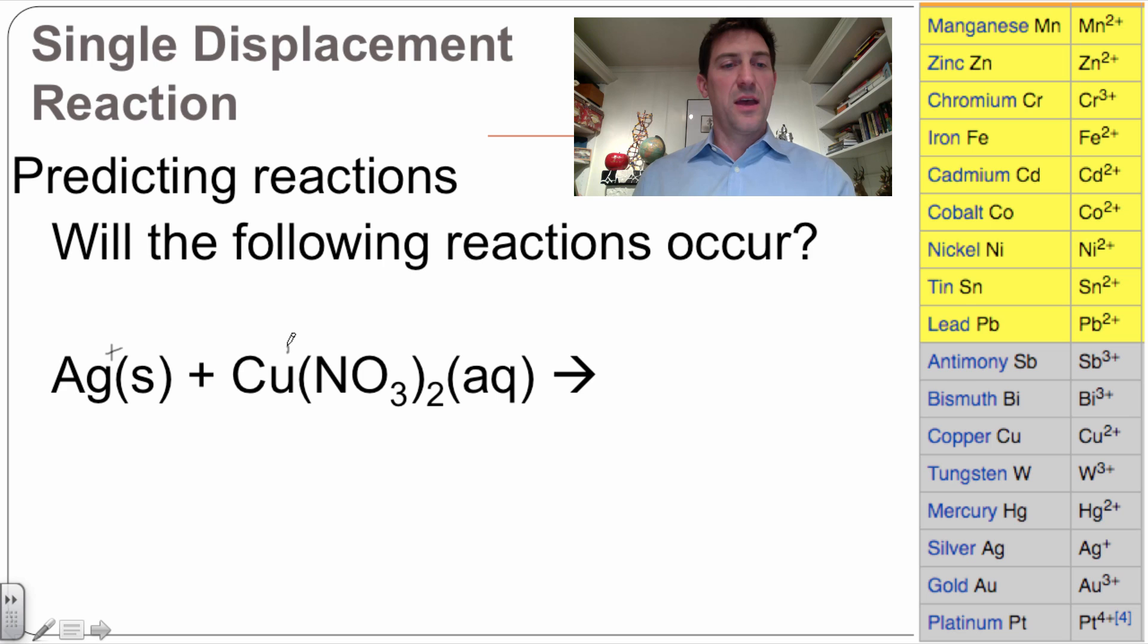Copper makes a positive ion, and nitrate makes a negative ion. So this silver could only come over and break off another cation or a positive ion.